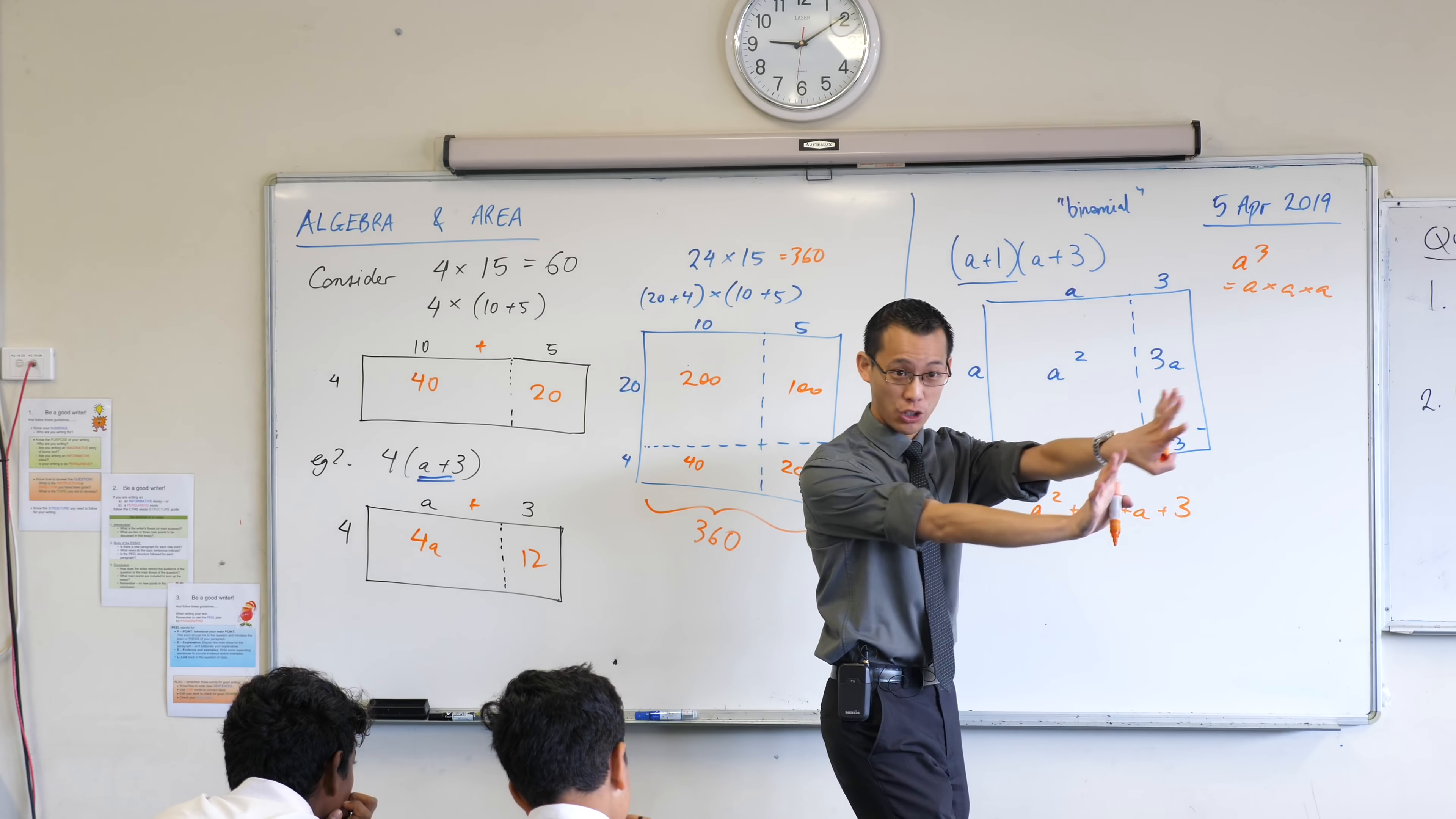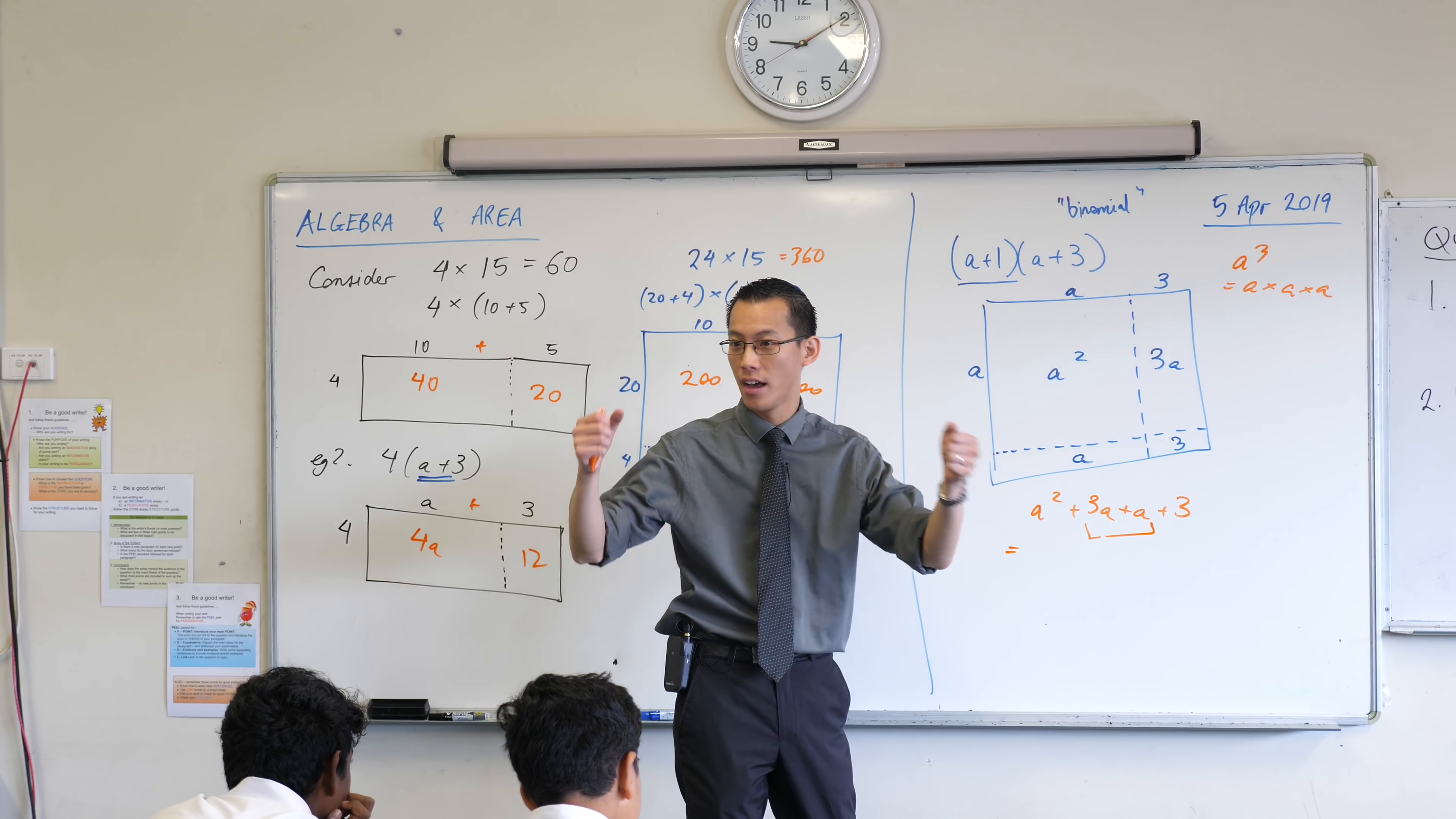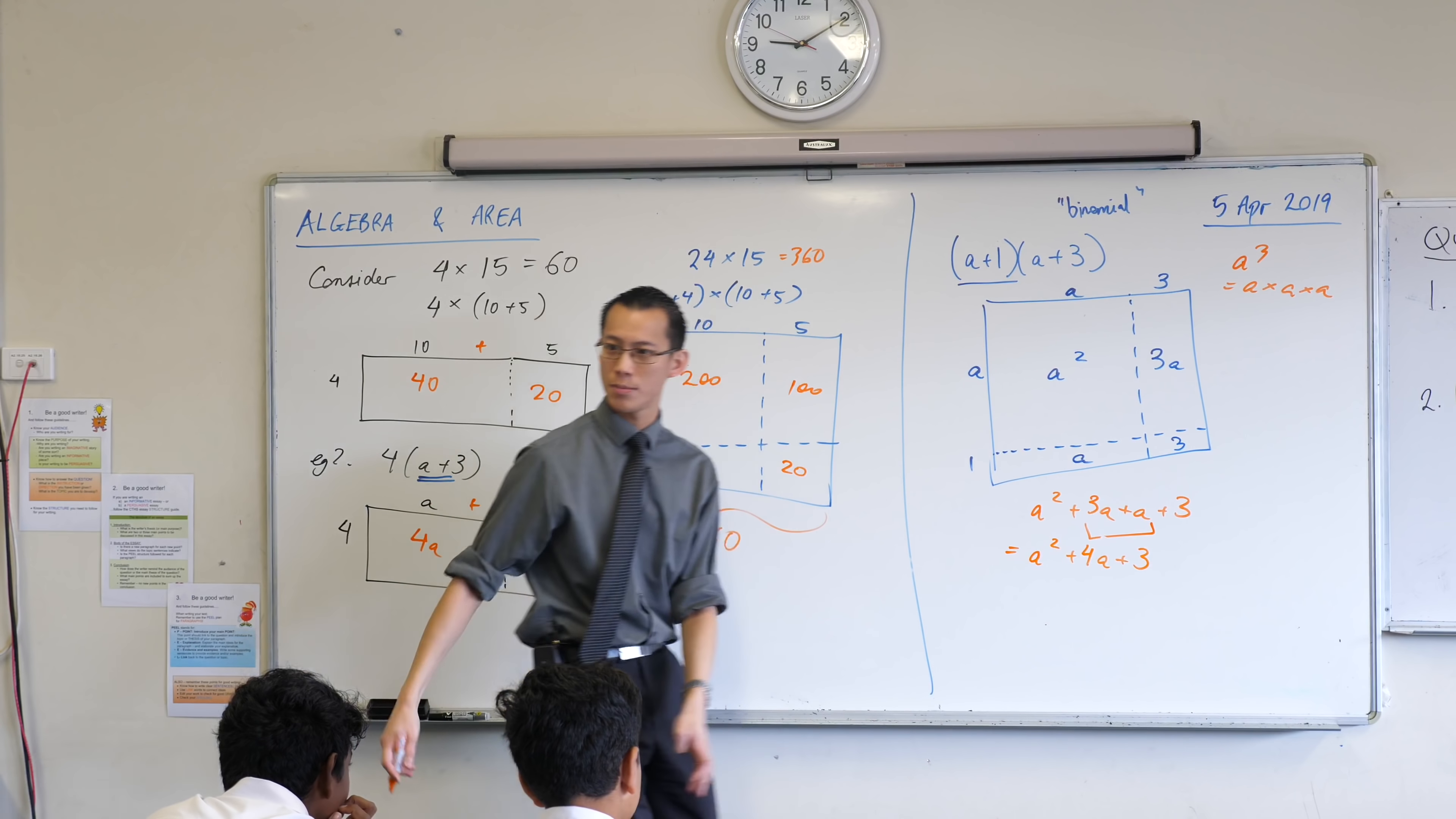There is something else I could do with these two in the middle, though. What would you like me to do, Louise? 4A. Yeah, does anyone remember this? It's called collecting like terms, these A's in the middle. There's three over here, one over there, so that gives me four in total. Does this make sense?